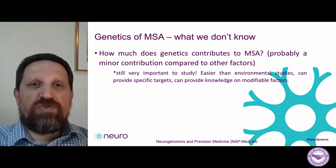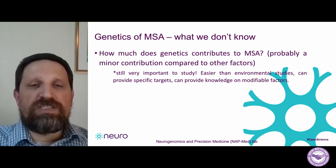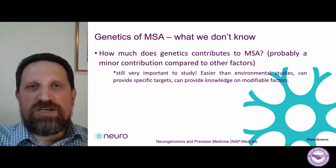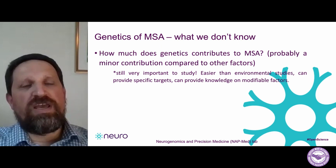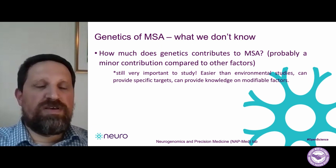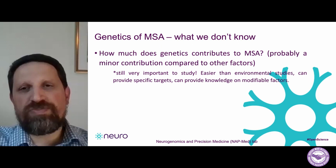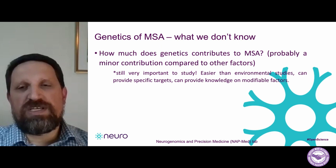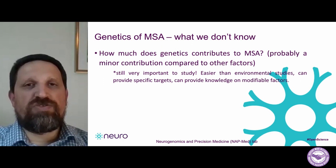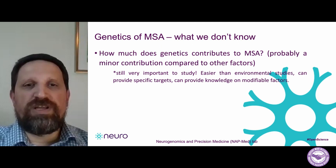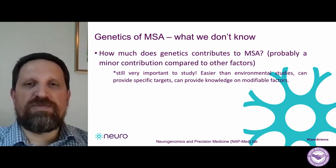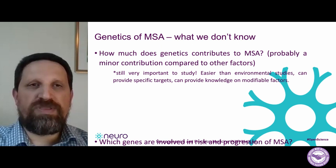Despite not knowing much about the genetics of MSA, it would be crucial to study because genetic studies are easier to do than environmental studies. If it's not genetic, it's either environmental exposure to something — whether in food, air, viruses, pathogens, etc. — or stochastic events we have no control of. Studying all these exposures and stochastic events is very difficult, but genetics is a lot more accessible. And as I mentioned before, it can also provide knowledge on modifiable factors that are not necessarily genetic.